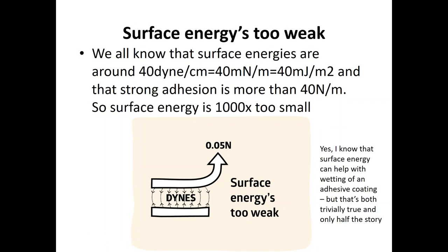Surface energy is too weak. Surface energies are 40 dynes, i.e. 40 millinewtons per metre, and strong adhesion is more than 40 newtons per metre — so surface energy is 1,000 times too small. At this point people invariably say, 'if you don't have a high surface energy, you can't coat the adhesive and therefore you won't get adhesion.' Well, that's trivially true, but it's only half the story. There's a much more interesting aspect to whether you can coat your adhesive, and it's not a surface energy effect.